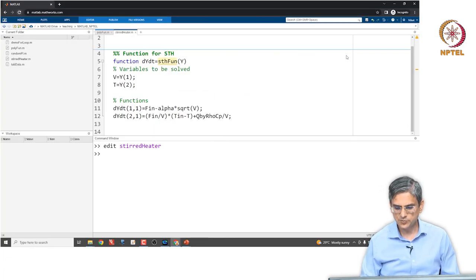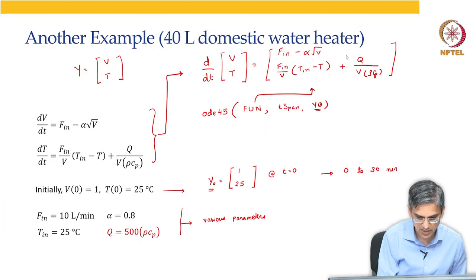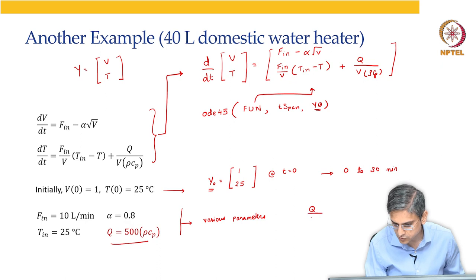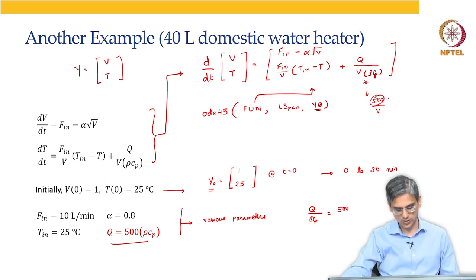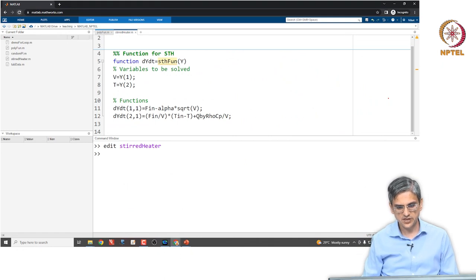Why I have written this as q by rho cp, because the parameter q is given in terms of 500 by rho cp. So q by rho cp is going to be equal to 500 divided by v, or this is the variable that I have called q by rho cp. That is just for convenience. If the rho and cp values were given, we would have had q as a parameter, rho as another parameter, cp as a third parameter, but because it is given in terms of q by rho cp, we will just write it like this and then end.